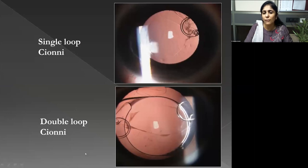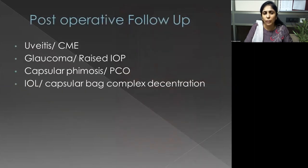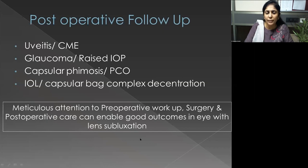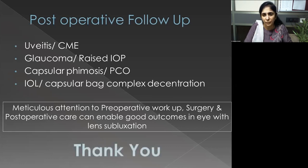You may consider a double-loop Cionni ring for more severe subluxation, such as a child with Marfan syndrome. Most patients tend to have some form of postoperative complications: raised IOP and secondary glaucoma are not uncommon, nor are capsular phimosis, PCO, and the risk of capsular bag–IOL complex dislocation. But with careful preoperative workup, meticulous surgery, and adequate follow-up, we can give these patients good outcomes.